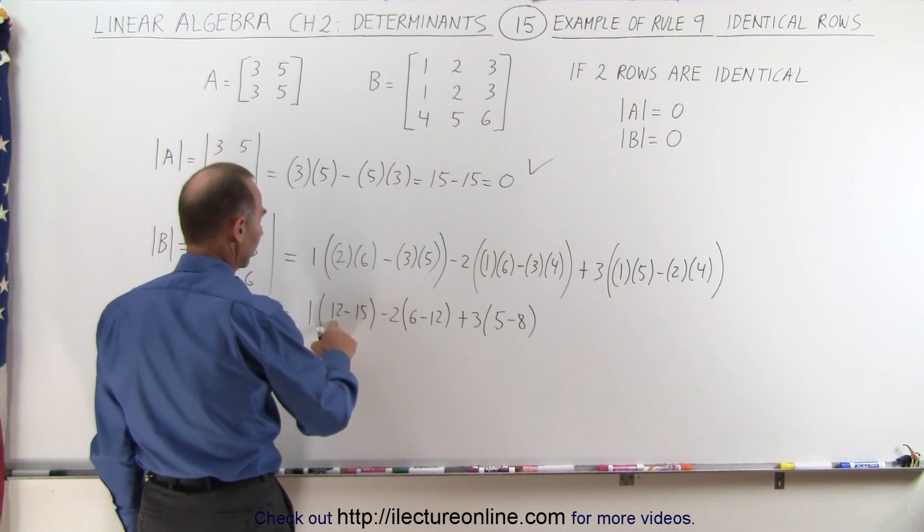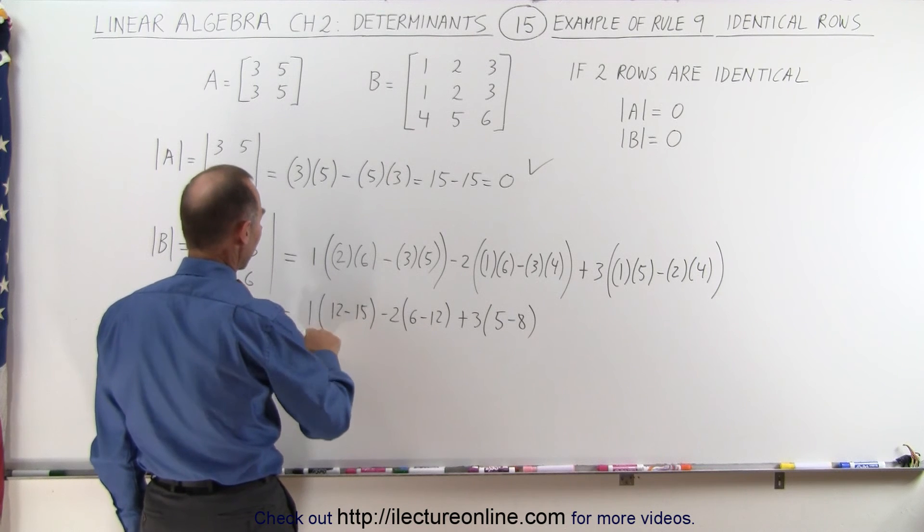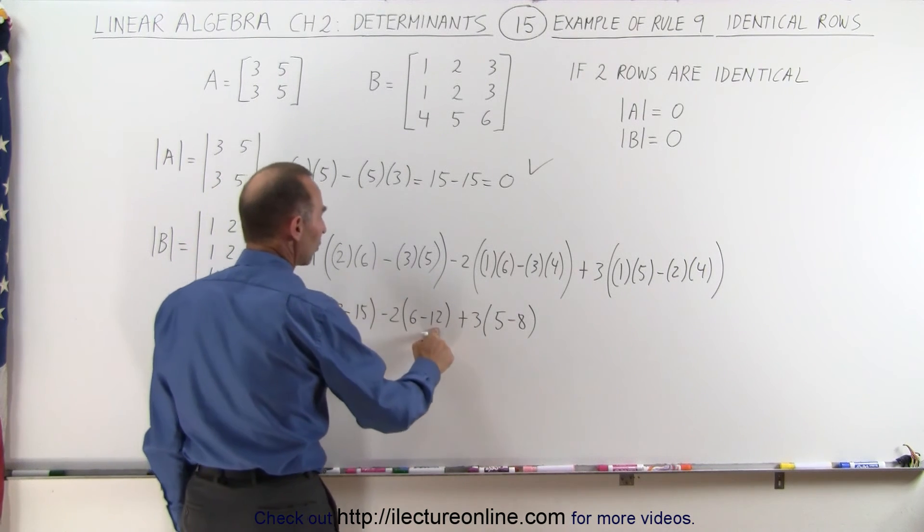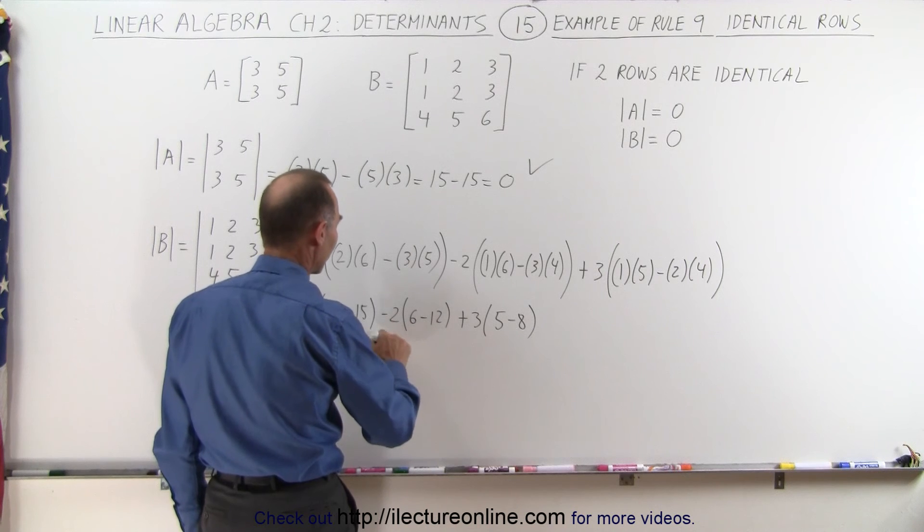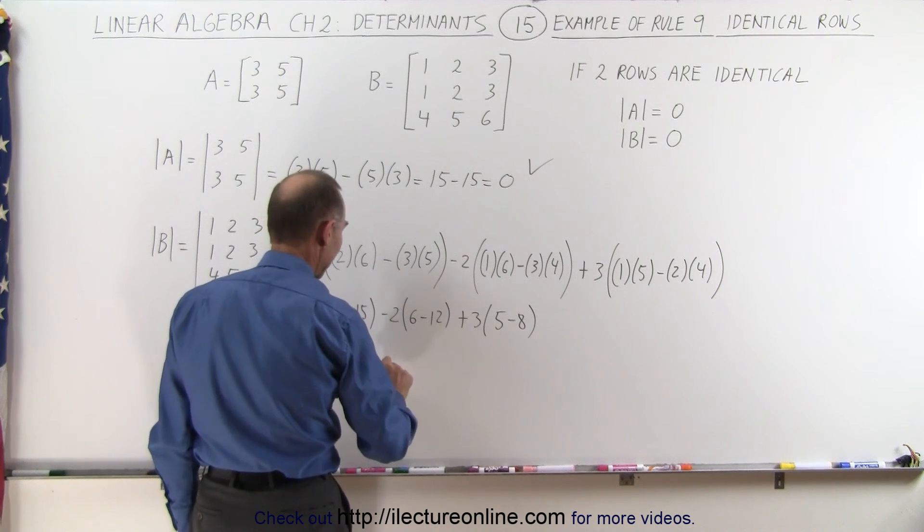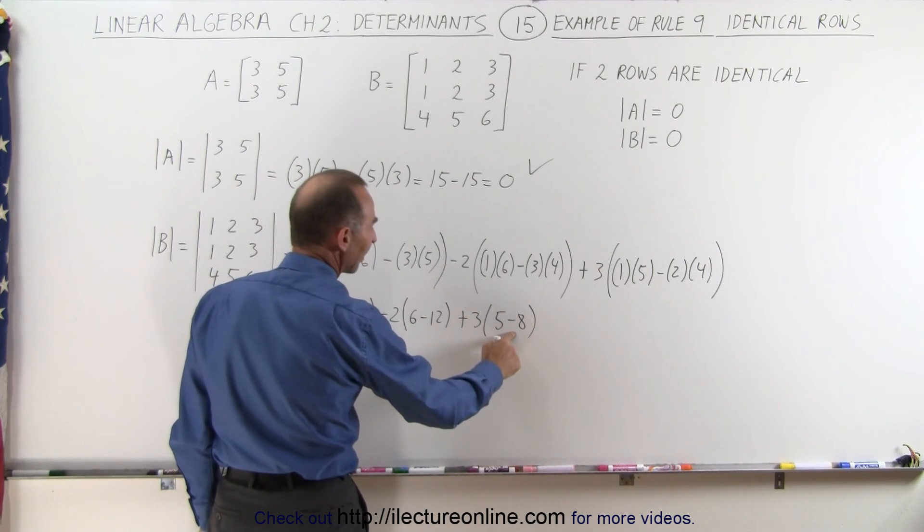This is equal to - that's 12 minus 15 is minus 3 times 1, that's minus 3. 6 minus 12 is minus 6 times a minus 2 is plus 12. And 5 minus 8, that's minus 3 times 3 is minus 9.